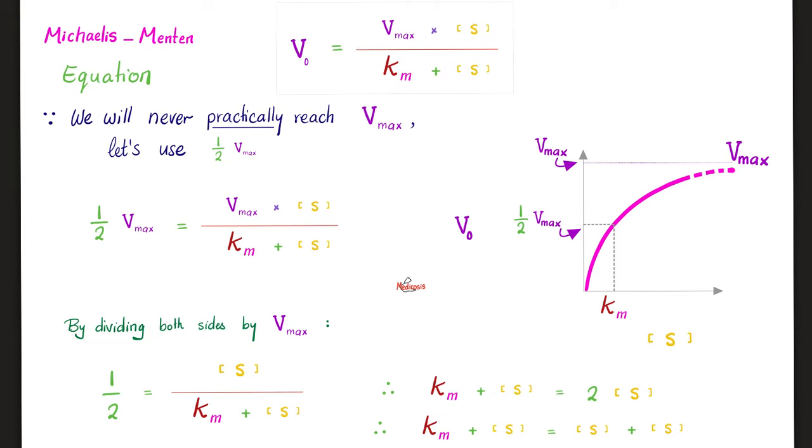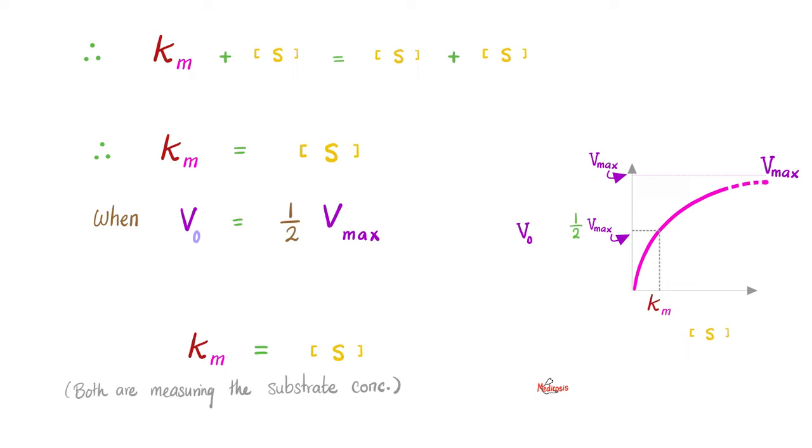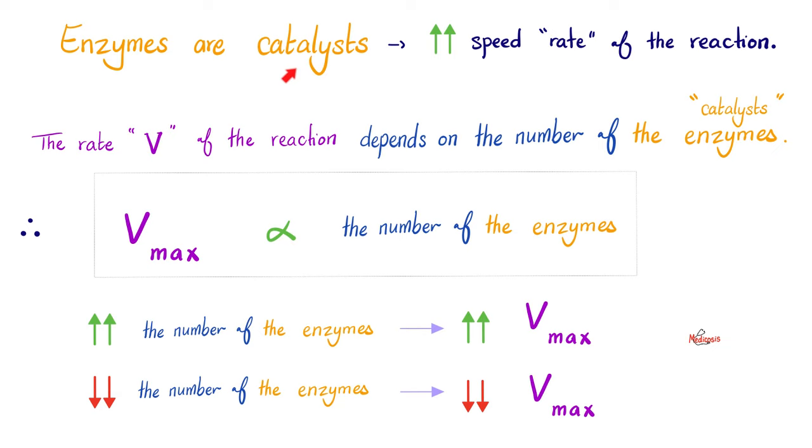And this is the same as this. By dividing each side by V-max, we will get the V-max from here, cancel it with this V-max, then half equals substrate concentration over Km plus substrate concentration. Do some scissors action. One times Km plus S equals two times S. Therefore, Km plus S equals S plus S, which means Km is almost the same as S. That's exactly right. If you do not believe me, just look at the graph. S is on the x-axis. Km is also on the x-axis or horizontal axis. Therefore, Km is the same as substrate concentration, provided that we're talking about a velocity that is half of V-max.